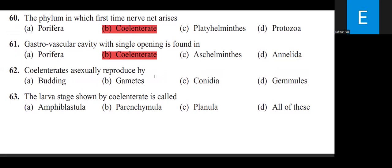Coelenterata reproduces asexually by Budding. The larval stage shown by Coelenterata is called Planula. Options included Amphiblastula, Parenchymula, and Planula — the correct answer is Planula.